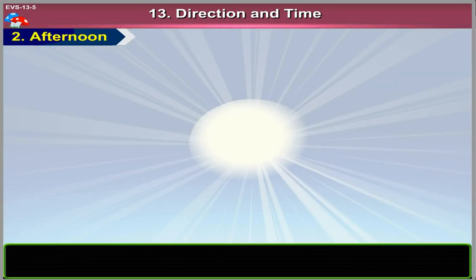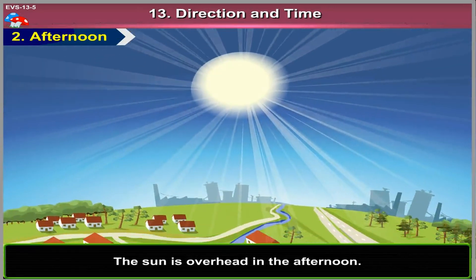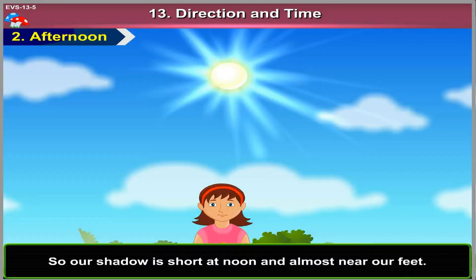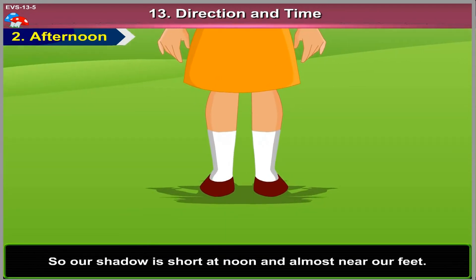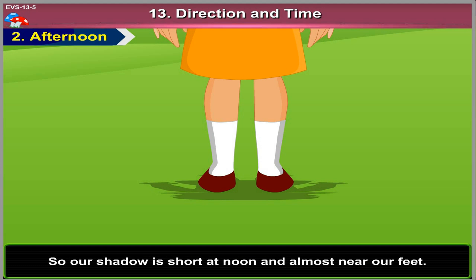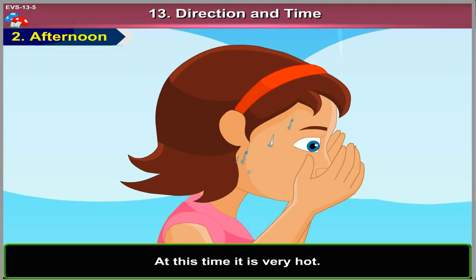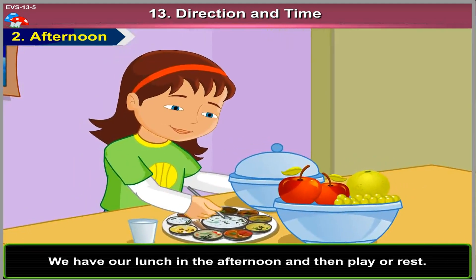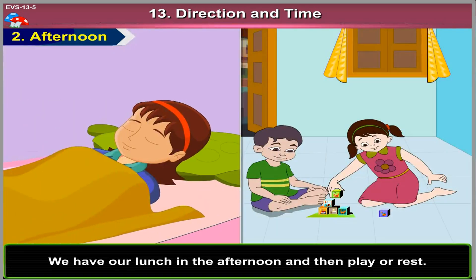Afternoon. The sun is overhead in the afternoon. So our shadow is short at noon and almost near our feet. At this time, it is very hot. We have our lunch in the afternoon and then play or rest.